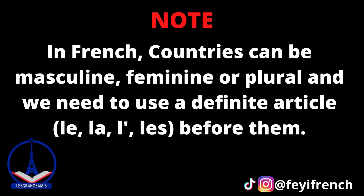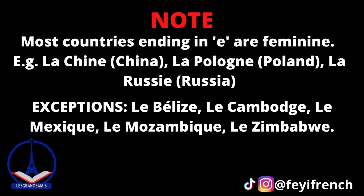Le for masculine countries, La for feminine countries, L' (apostrophe) for countries beginning with a vowel, and Les for plural countries. Furthermore, nearly all countries ending in the letter E are feminine in French. For example: La Chine meaning China, La Pologne meaning Poland, La Russie meaning Russia.